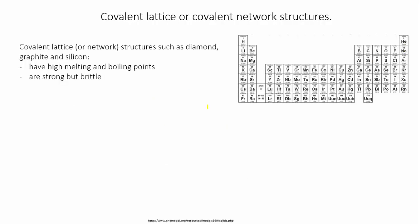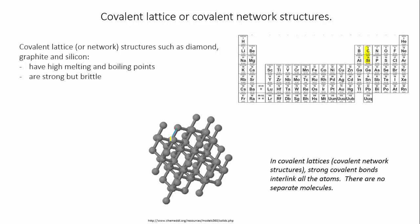If we look at covalent lattice structures, however, they are no longer made of separate molecules. Instead, the atoms are all interlinked by strong covalent bonds. This means these substances, such as diamond and graphite and silicon, can have very high melting points and are much stronger, though they're still brittle.